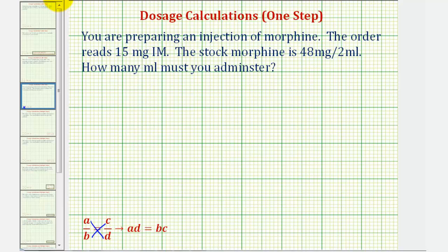So looking at the given information, we'll start with the fact that the stock morphine is 48 milligrams per two milliliters. This will be our first rate. Next, we want to administer 15 milligrams IM, so the second rate will have an unknown. This will be 15 milligrams per X milliliters.